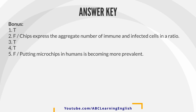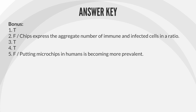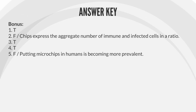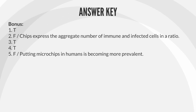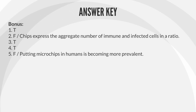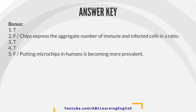Bonus answers: 1. True. 2. False — chips express the aggregate number of immune and infected cells in a ratio. 3. True. 4. True. 5. False — putting microchips in humans is becoming more prevalent.